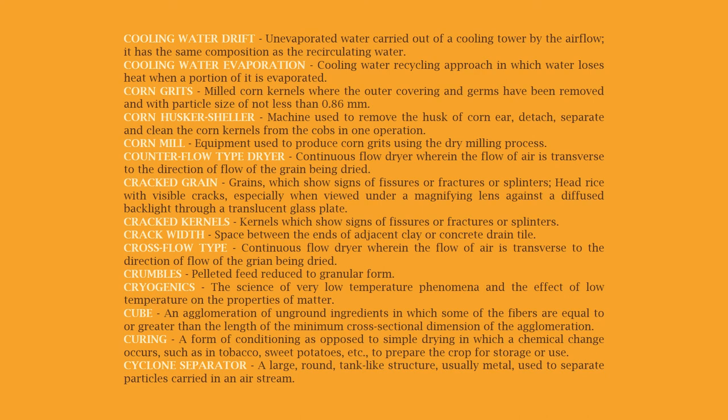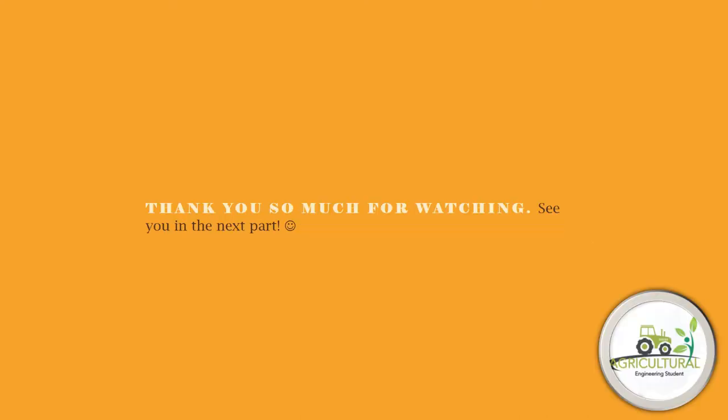Curing: a form of conditioning as opposed to simple drying, in which a chemical change occurs, such as in tobacco, sweet potatoes, etc., to prepare the crop for storage or use. Cyclone separator: a large round tank-like structure, usually metal, used to separate particles carried in an airstream.